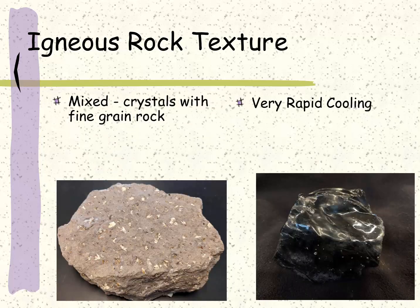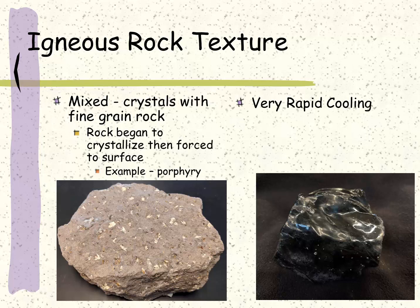There are also some in-betweens and some oddities in igneous rocks. The image on the left shows a mixed example where we have a rock that has fine grain but some visible crystals. This example of porphyry is a rock that began to crystallize when it was in a magma chamber, but then the volcanic eruption ejected it out to the surface where the rest of the rock cooled. On the other hand, the rock on the right is obsidian — a volcanic glass that cooled so rapidly there are no visible crystals within the rock sample.